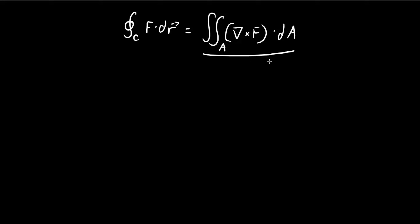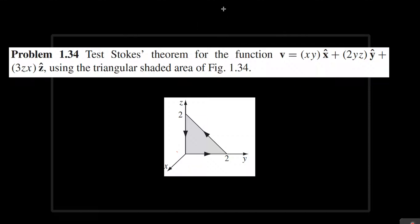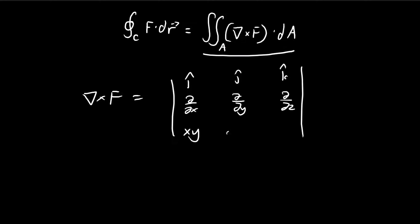So in our case, let's try to calculate this term first. Obviously we need to find the curl, so let's just apply the formula. In the bottom row, we put down the vector field, which is equal to xy in the x direction and 2yz in the y direction, and 3zx in the z direction. And then we just do this like the normal way we'd treat a determinant.